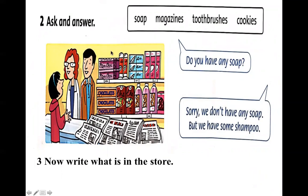Các bạn thấy ở đây là một cái store — một cái cửa hàng. Các bạn hãy nhìn vào trong cái cửa hàng này có những gì. Chúng ta sẽ có một số từ: soap, magazines, toothbrushes và cookies. Ở đây thì các bạn sẽ nhìn vào để đặt câu. Ví dụ câu 1: Do you have any soap? — bạn có xà bông không? Sorry, we don't have any soap. But we have some shampoo. Các bạn sẽ nhìn vào cái nào cửa hàng có thì các bạn sẽ đặt câu, dùng ANY và SOME.